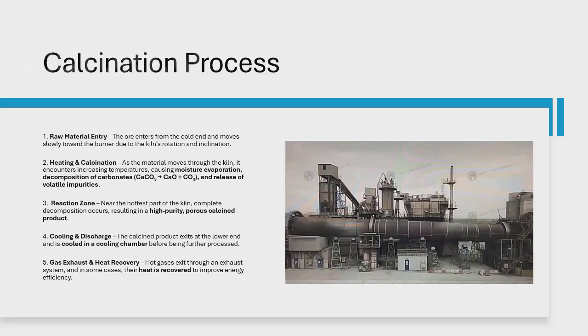The calcination process involves raw material entry, heating, reaction, cooling, and gas exhaust recovery. Each stage is crucial for transforming raw materials into high-purity, porous calcined products, ready for further industrial use.